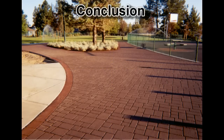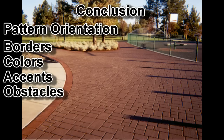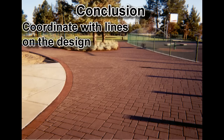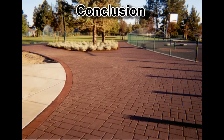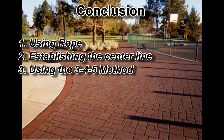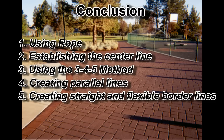We have now reviewed the key factors for designing a quality street print project that will yield the most productive installation and aesthetically pleasing finish. Pattern orientation, borders, colors, accents, and obstacles are the key factors to remember during the design process. The key factors to remember during the layout process include coordinating layout lines with the design and keeping layout lines straight and square. Lastly, we reviewed using the layout tools, which includes using rope, establishing the centerline, using the 3-4-5 method, creating parallel lines, creating both straight and flexible border lines, and marking accent lines.